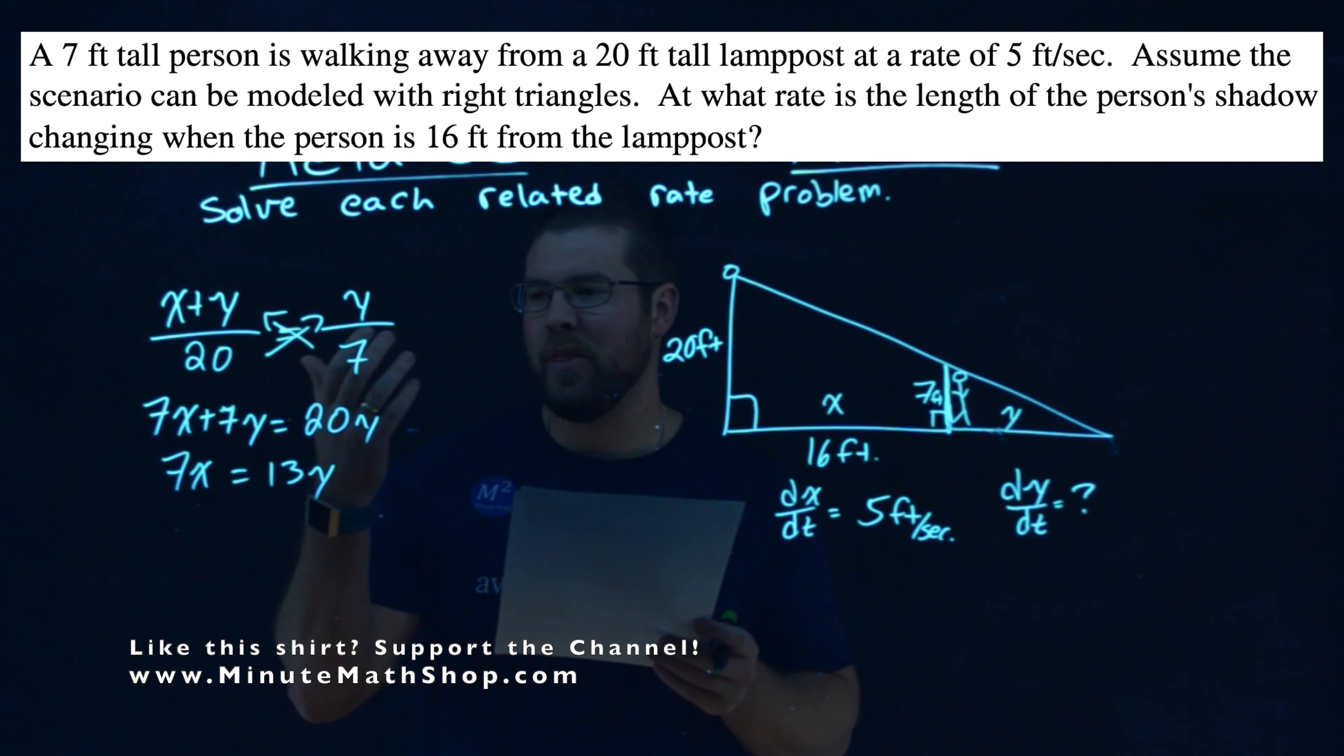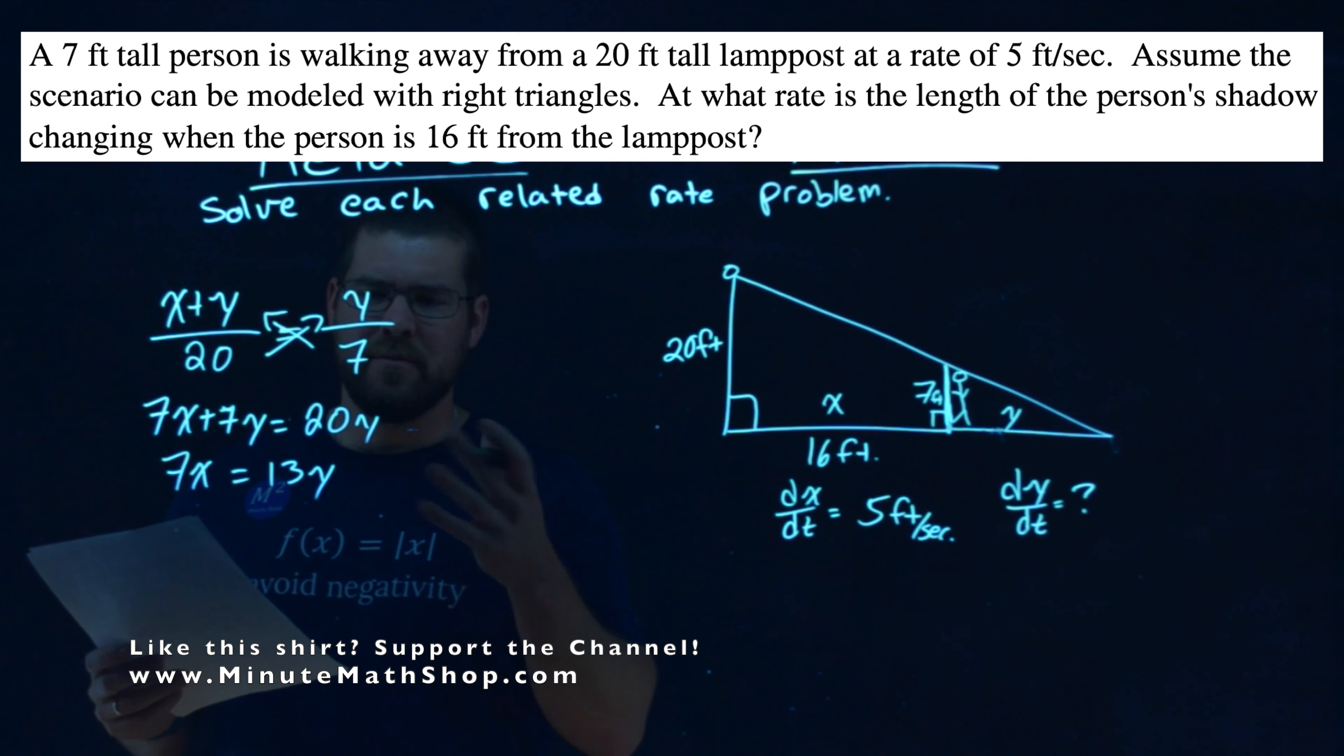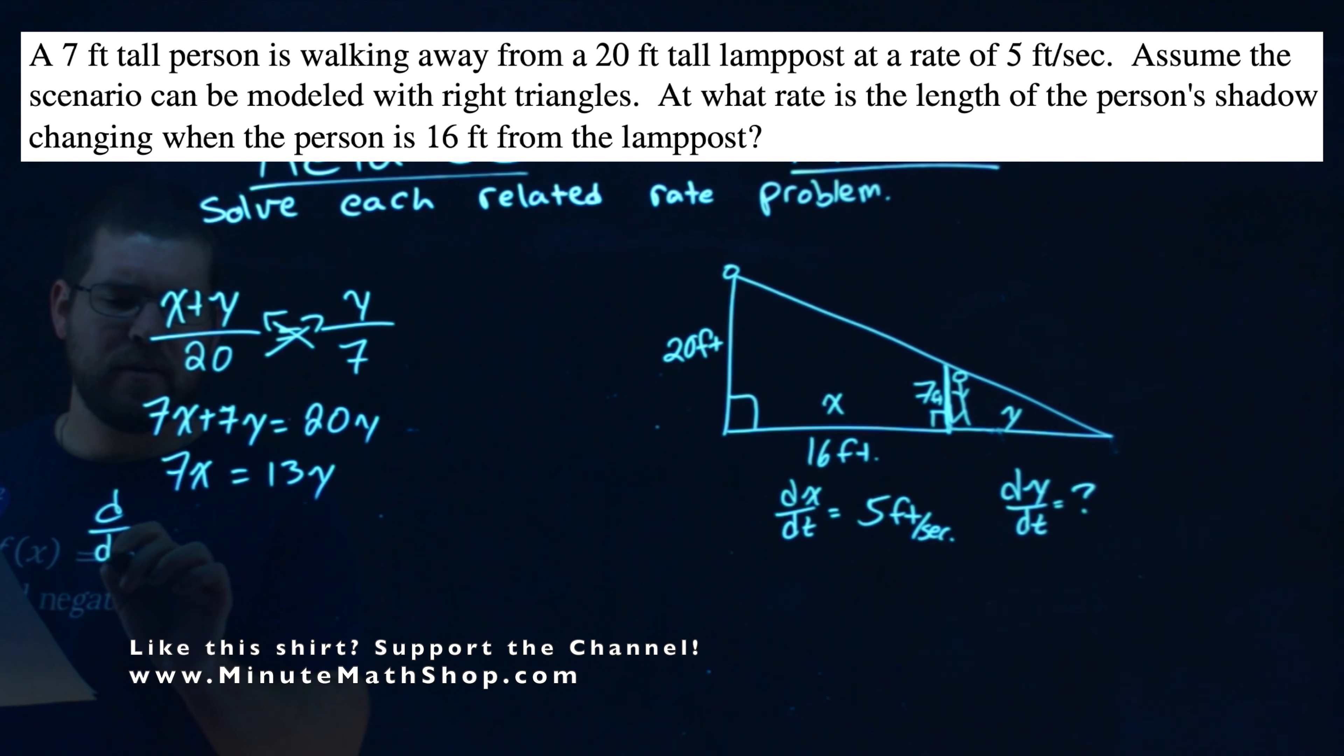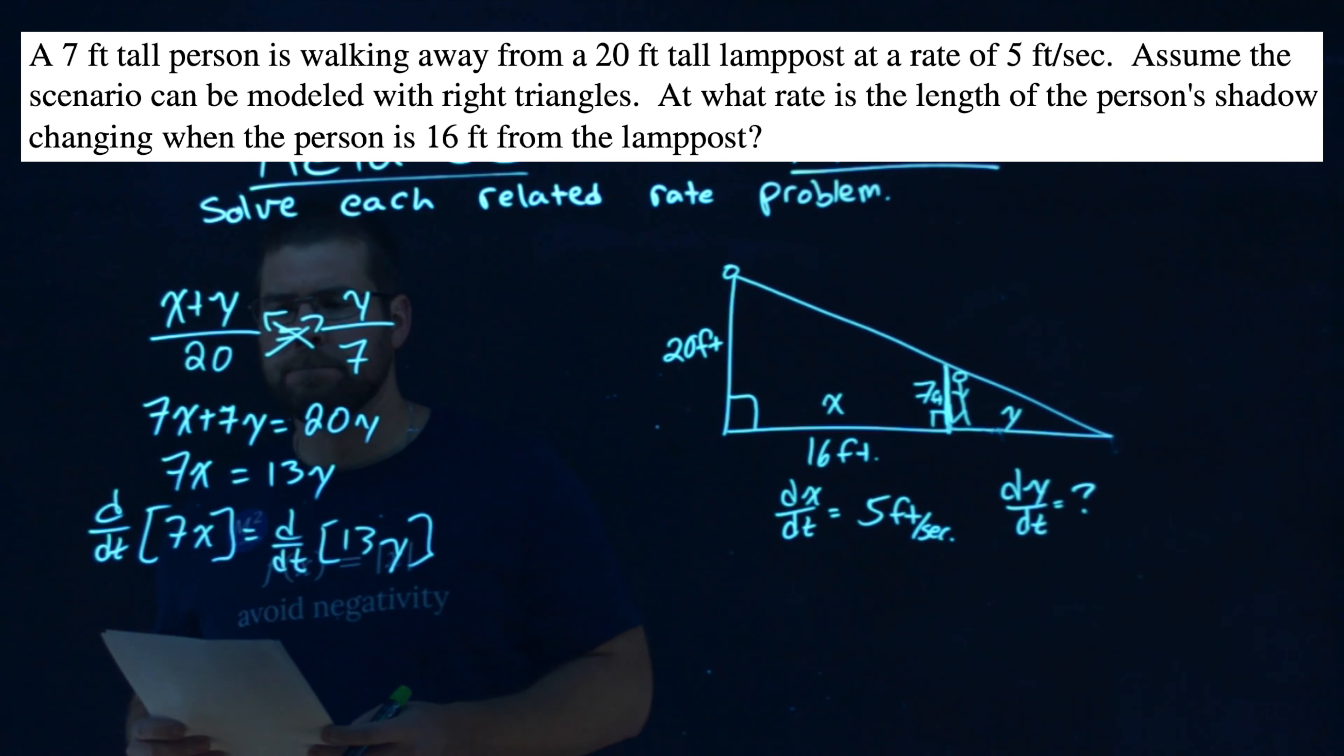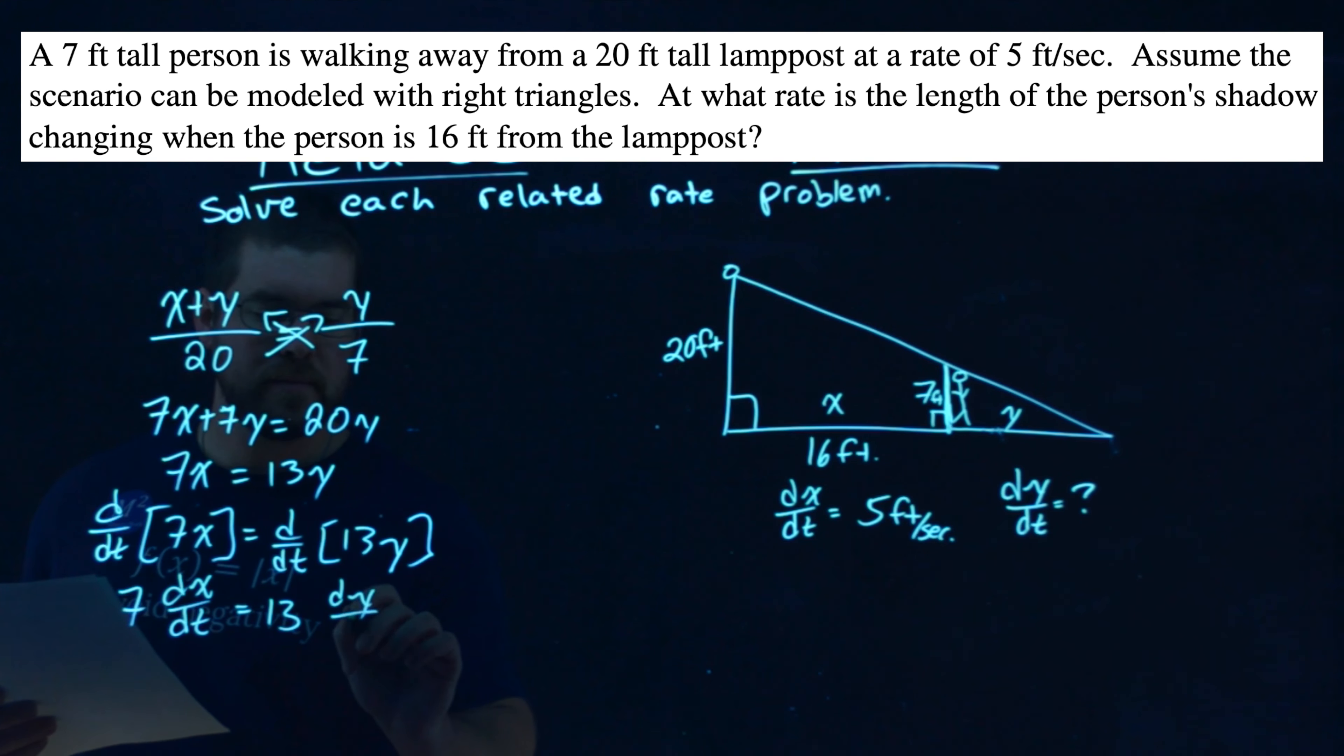And it's at this point I like to deal with this part. Some people will solve and maybe get y completely by itself, but I don't feel like dealing with that fraction yet. So it's up to you. I'm going to derive both sides with respect to time. D over dt now times or of 13y. This actually becomes very simple. Derivative, the constant just comes out front and the derivative with respect to time of x is just that dx/dt.